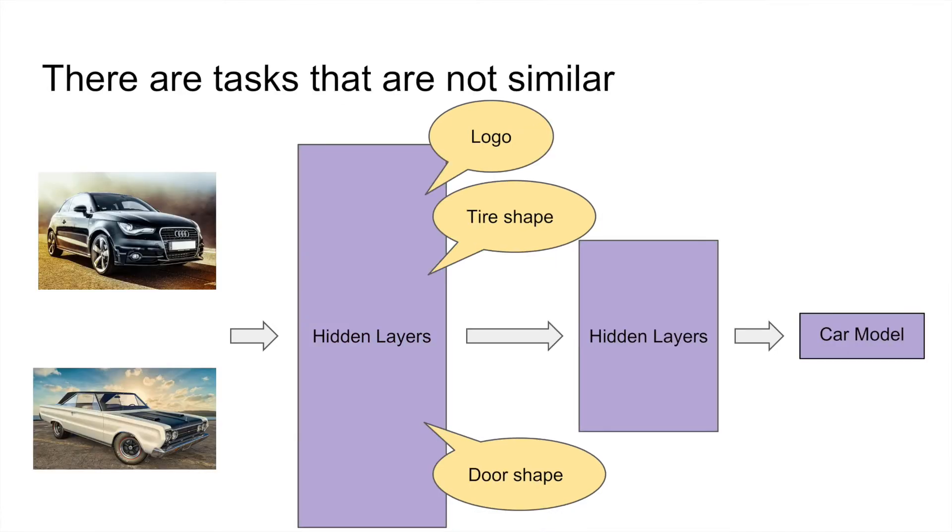However, there are tasks that are not similar and do not share the same features. For example, if we want to predict the car model from a picture, the feature extractors for cats and dogs will probably no longer be useful.